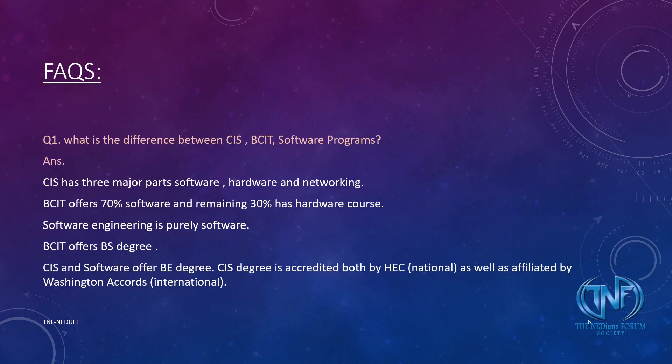Let's discuss some frequently asked questions. Number one: what is the difference between CIS, BCID and Software Engineering? CIS has three parts: Software, Hardware and Networking. BCID offers only Software and Hardware courses, in which Software has a larger proportion. Software Engineering is purely based on Software.